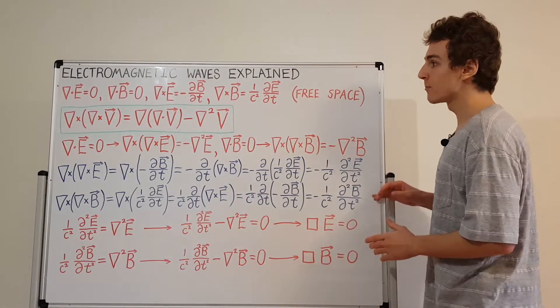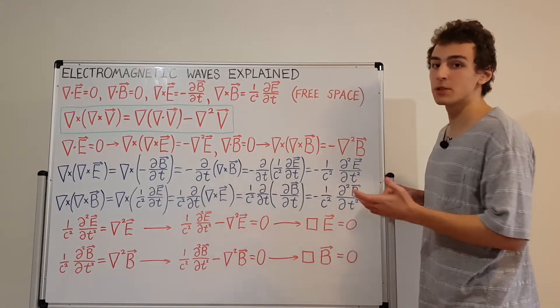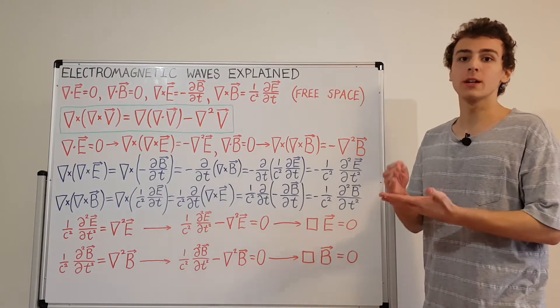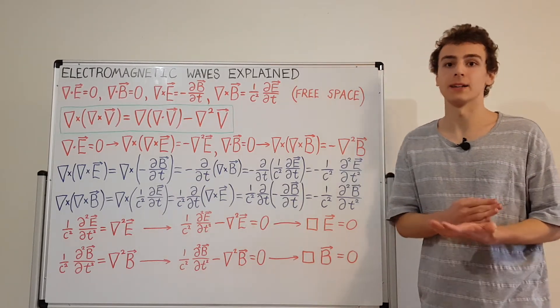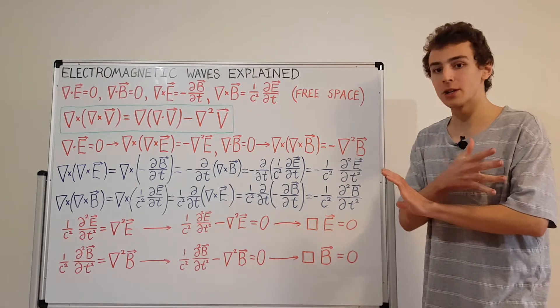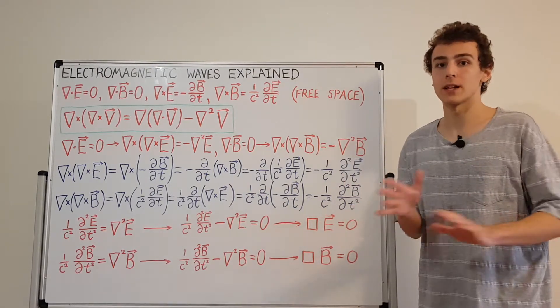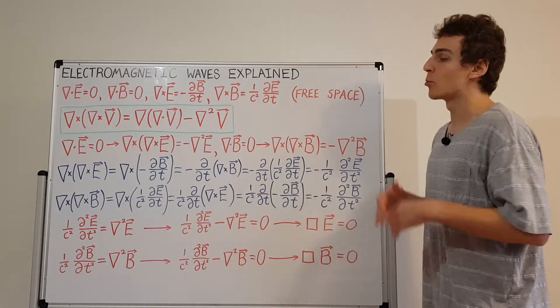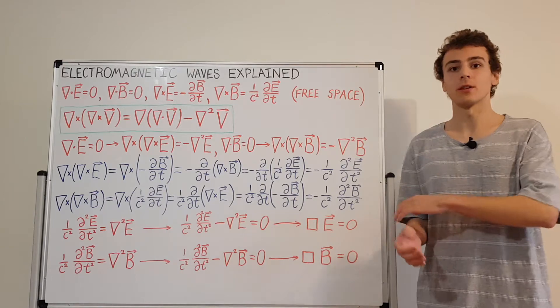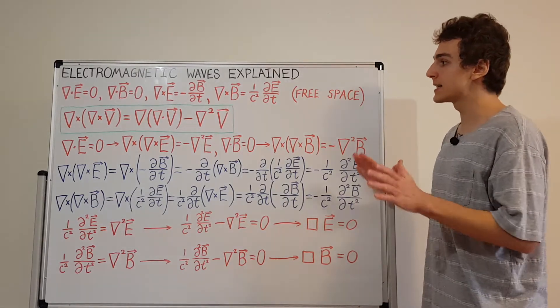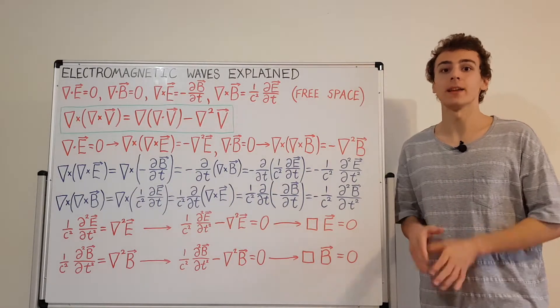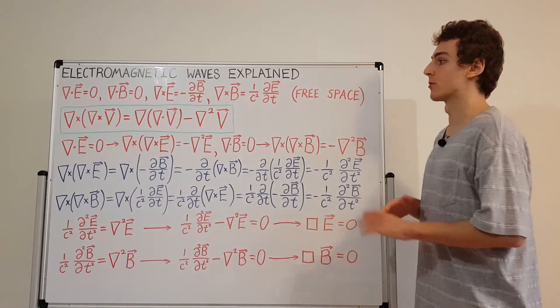So where does this all come from? Well, it comes from Maxwell's equations. Maxwell's equations are pretty much the most important equations in classical electromagnetism. Those four equations are pretty much the descriptions of all of classical electromagnetism. With the addition of the Lorentz force, that tells you how charges respond to electric and magnetic fields. But besides that, those four equations are fundamental to electromagnetism in the classical model of reality.